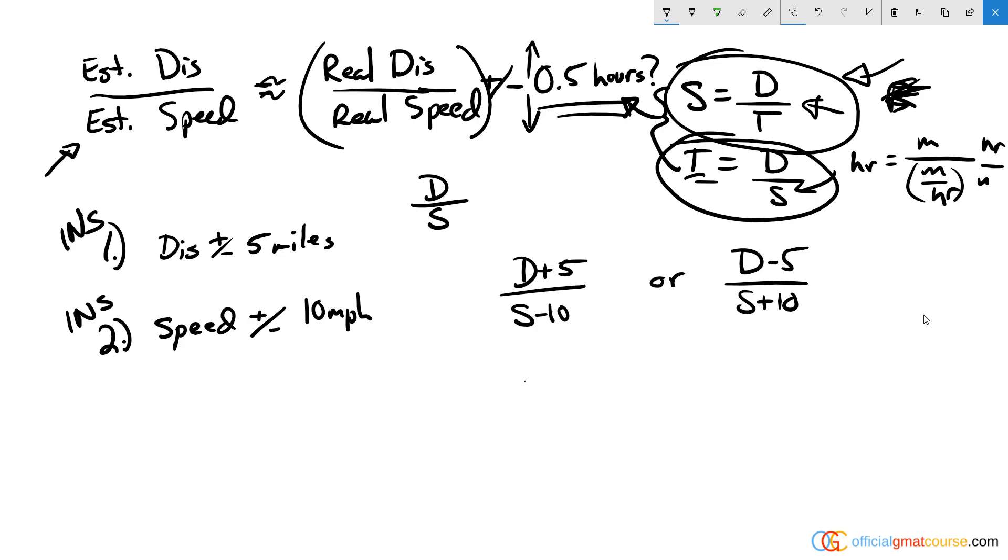When you divide by a fraction, you multiply by the reciprocal, which would give you hours over miles, and the miles would cancel, leaving you in hours. So I know that I at least need them together—we're looking at a C or E answer here.